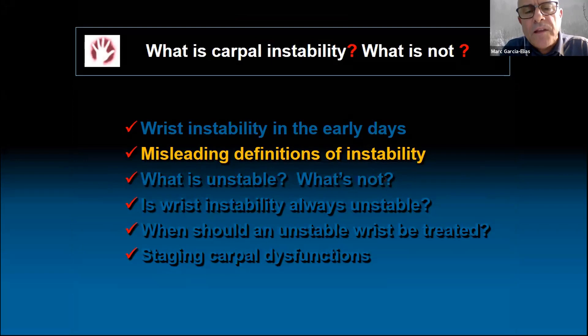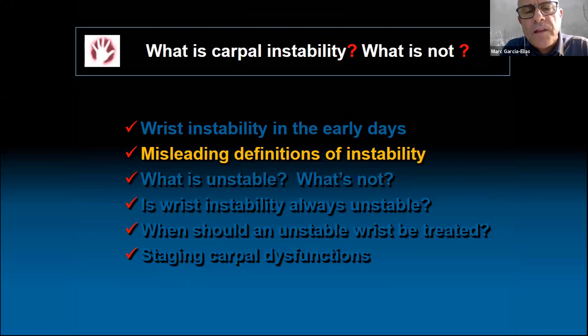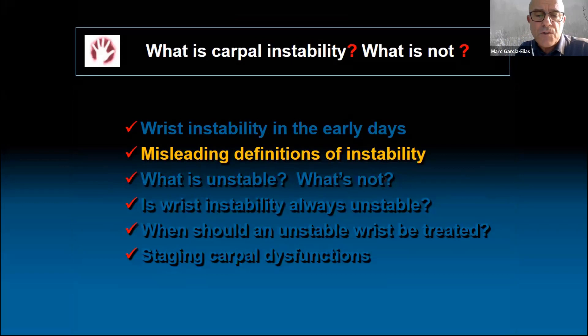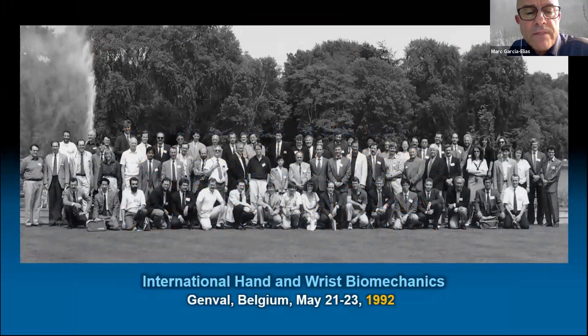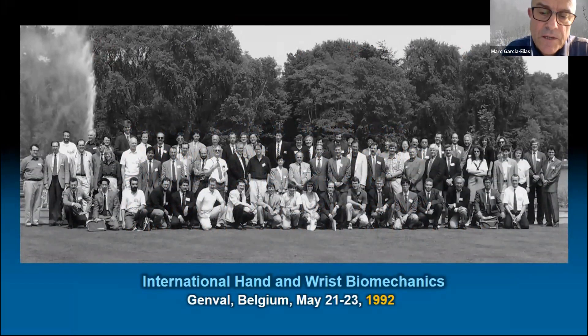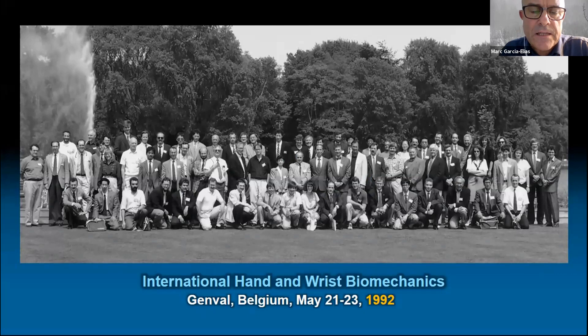There have been attempts to explain instability. Many authors tried, but most failed to get their ideas through. In that sense, I would like to mention the IFSSH position statement published in 1999. It was at the GenVal meeting near Brussels, organized by Frederick Schwyn. In the GenVal meeting of 1992, the International Wrist Biomechanics Group was asked to discuss and decide how to define instability.